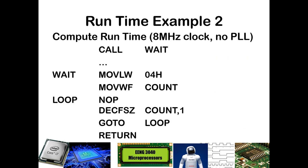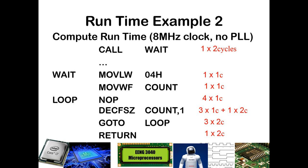Continuing to our next example — computing the runtime again, no PLL, calling wait — but now we are adding a NOP inside the loop. The call executes once with two cycles. Loading W with four executes once for one cycle; moving to count, once for one cycle. The NOP happens every time we go through the loop — four times — and is a one-cycle command. The decrement happens four times total: three times without skipping at one cycle, once with skipping at two cycles. The goto executes three times at two cycles each, and the return once at two cycles. Adding up: 2 + 1 + 1 + 4 + 5 + 6 + 2 = 21 cycles, or 10.5 microseconds.